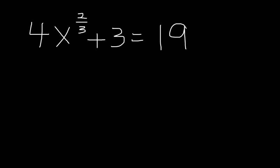Follow that same pattern. We want to get this x to the two thirds power right here by itself. And if we can do that, then we'll be able to solve this problem as a regular problem. So the first thing I'm going to do is I'm going to subtract three from both sides. So 19 minus three is 16.